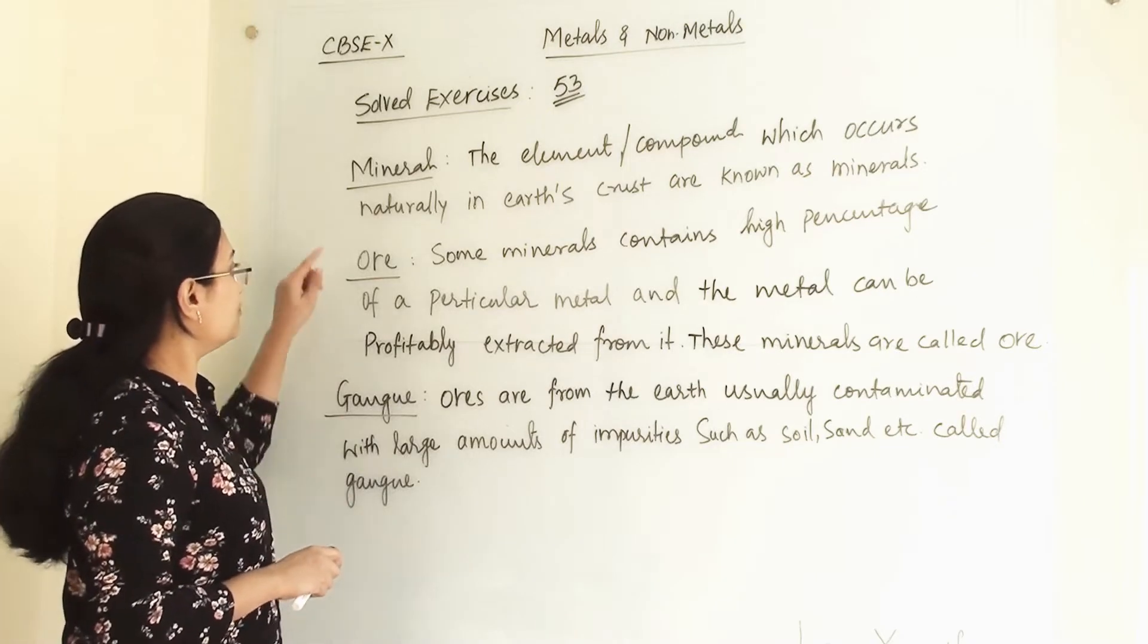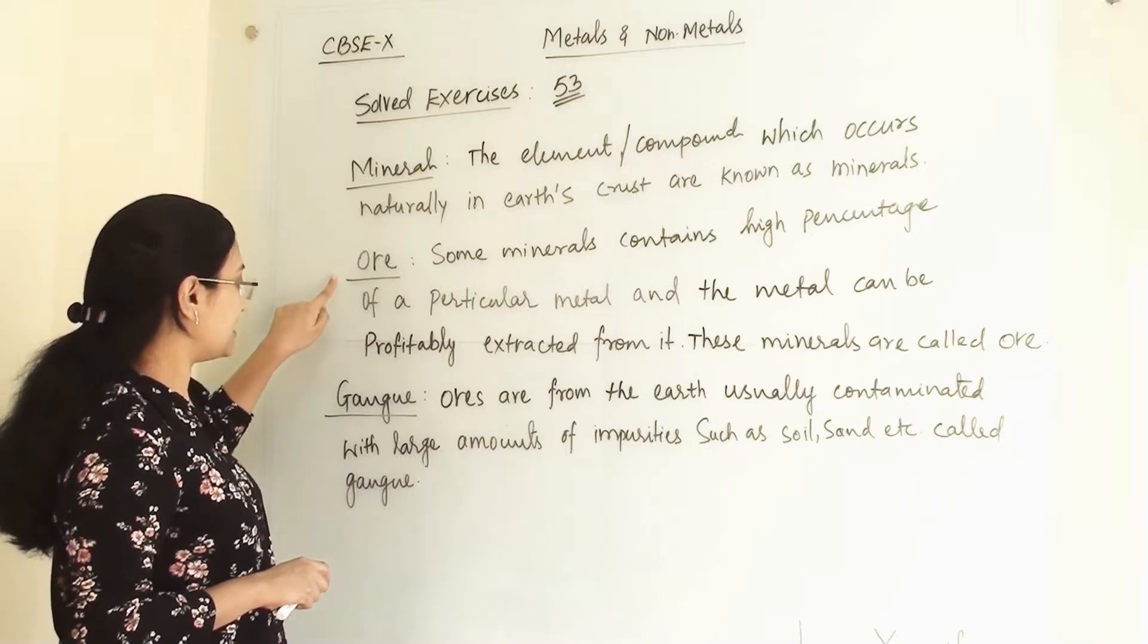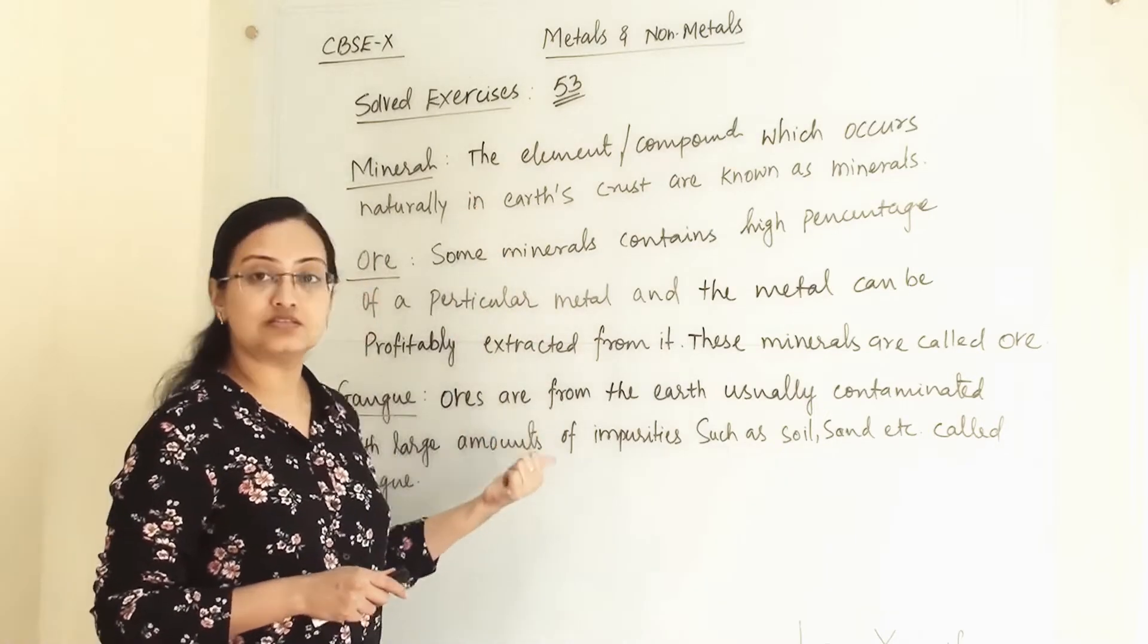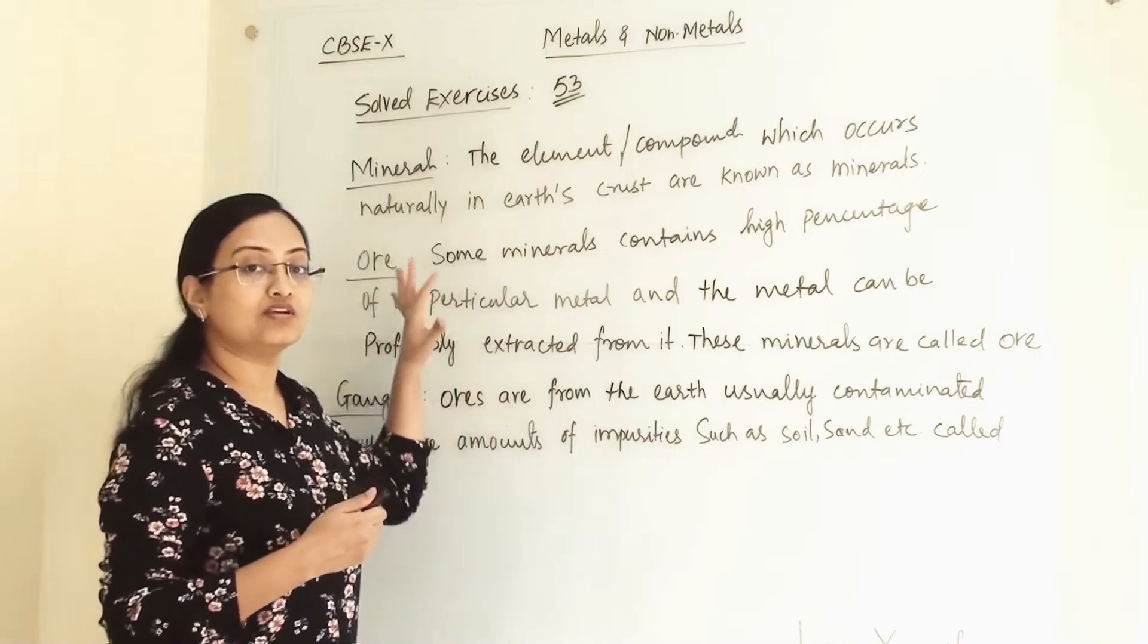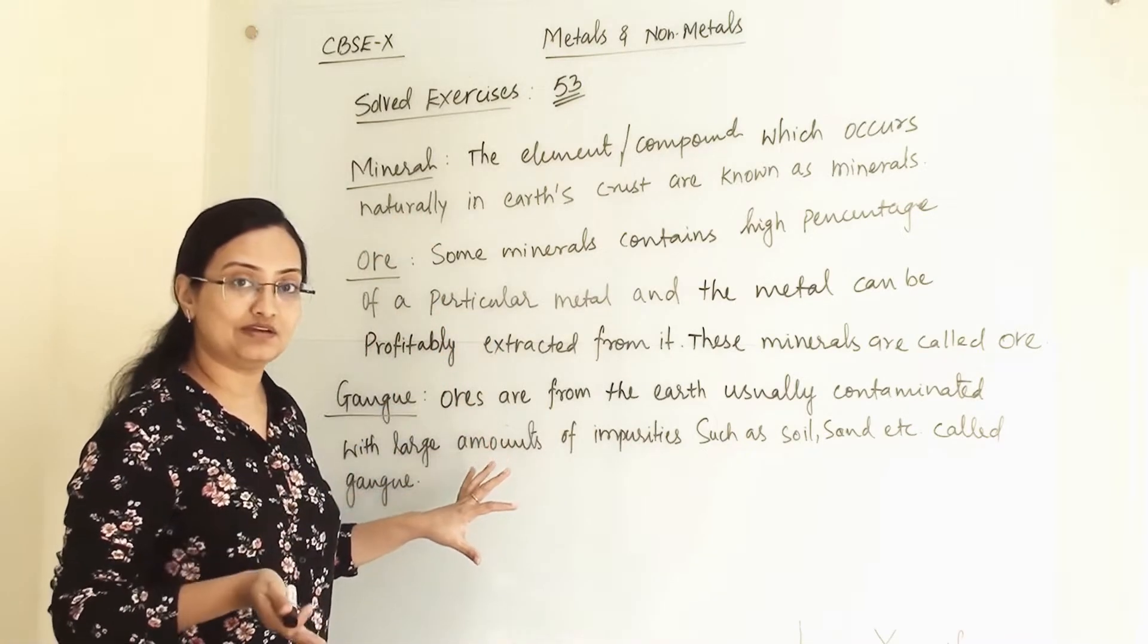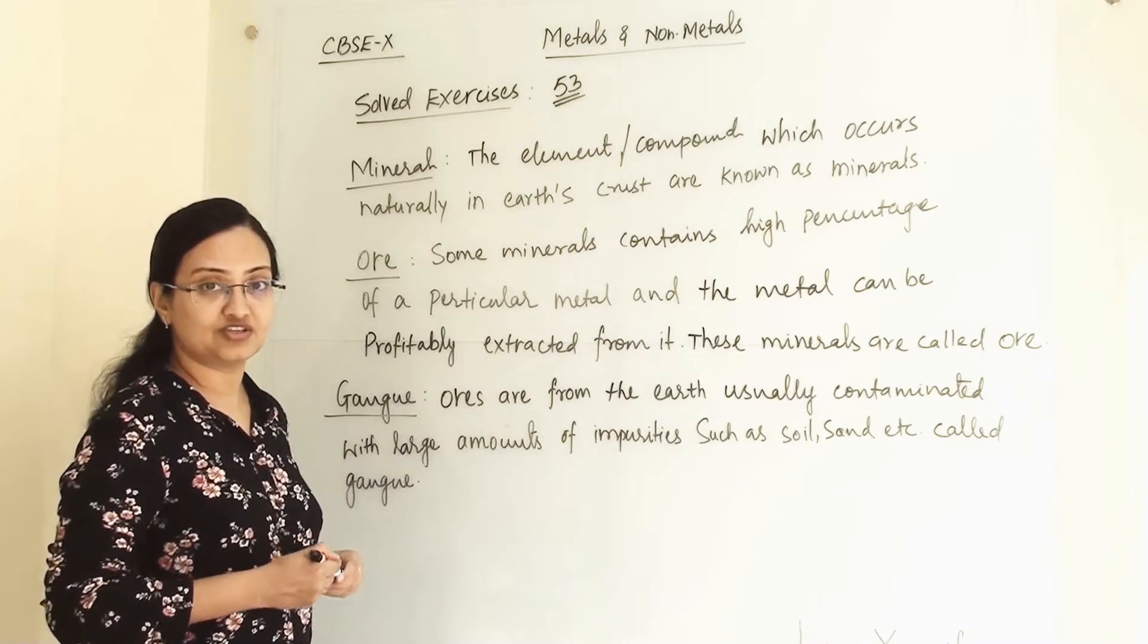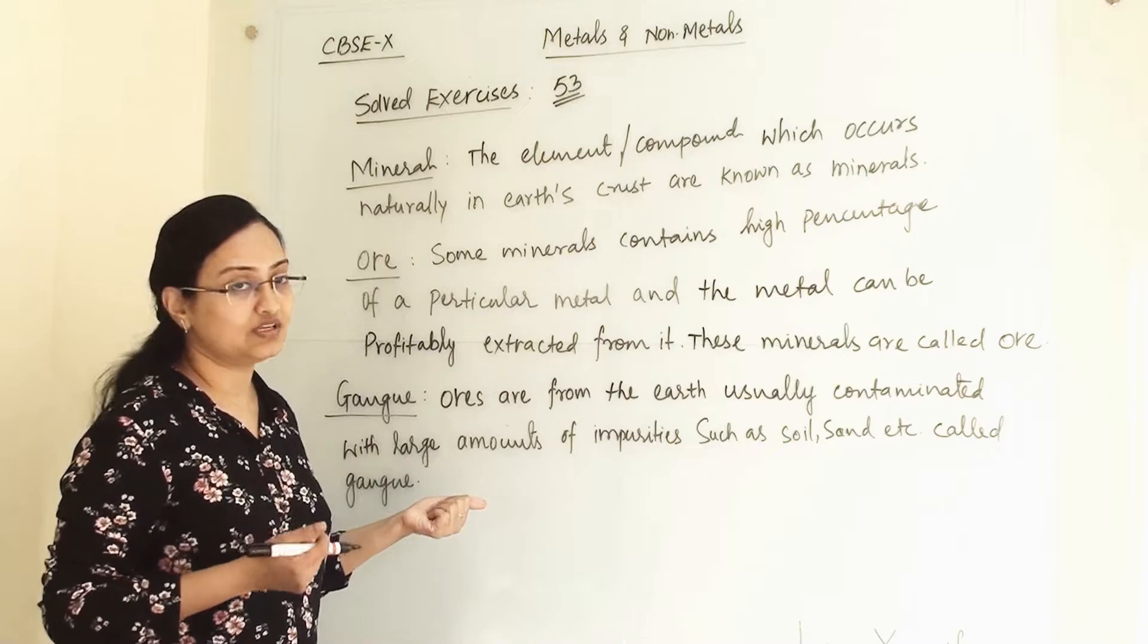Here we are going to write the definition for these three: first is mineral, second is ore, and third one is gangue. In my explanations video we have discussed all these three thoroughly and we understood what these three terms are used for. This is from the metallurgy and why these three terms are different from each other. Here we will understand the definition, and the explanations video link I have given in the description.